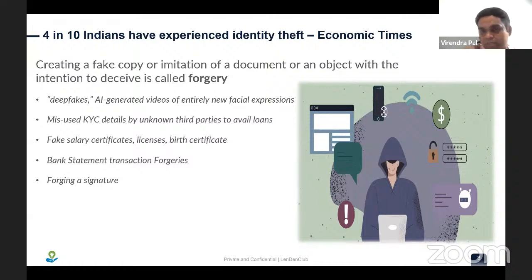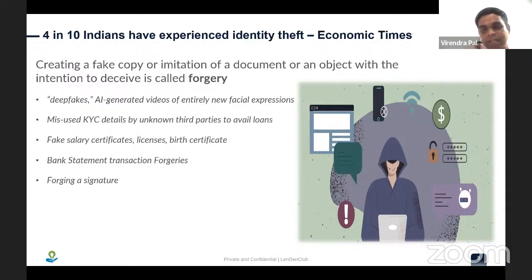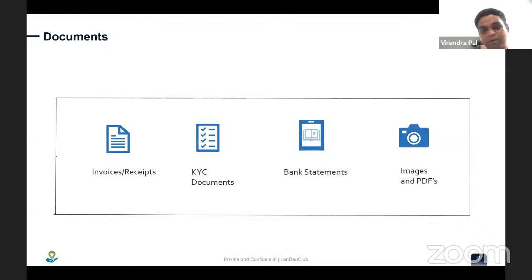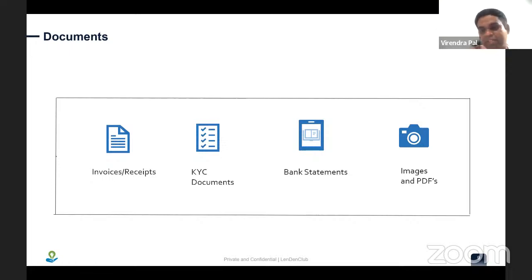We need to develop and adopt systems to reduce forgeries. We can try to stop forgery at the very beginning by back-checking data from the source using APIs, but this is not available for all documents. Even if someone morphs their face onto a PAN image, it becomes very difficult to find out. The relevant document types for the lending industry include all invoices, receipts, salary documents, KYC documents, bank statements, face data, image data, and PDF data received — all of which can be subject to digital forgery.